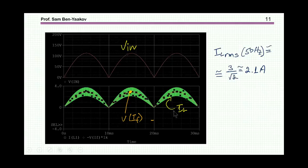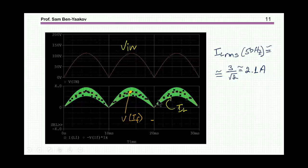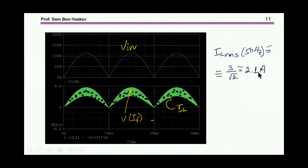Here are the results. This is the rectified input voltage. This green is the inductor current, and inside it is the average voltage as measured by the sense resistor. In this particular case, we find that the peak value of this AC current at the rectified input is about 3 amps, so the RMS is 3 over square root of 2, which is 2.1 amps. So this is the low frequency component, but we are interested in the high frequency component.